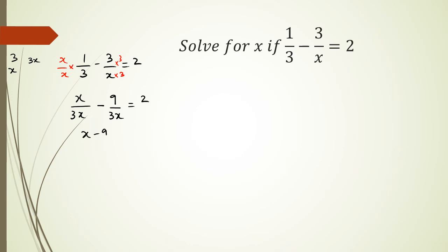Because they have common denominators, I can write x minus 9 over 3x equals 2. And because 3x is in the denominator, I can move it to the other side, and it will become multiplied. So I'm left over with x minus 9 equals 6x.